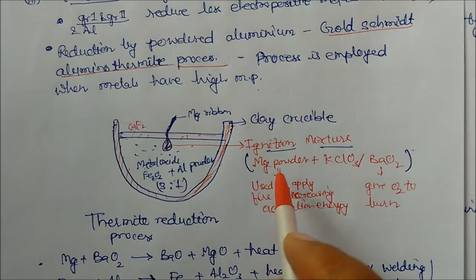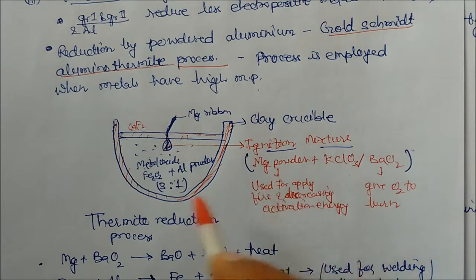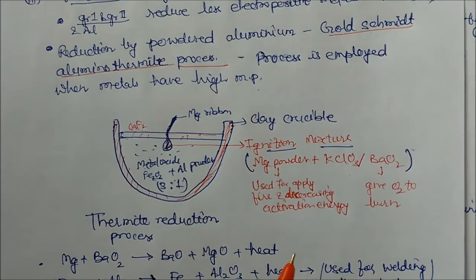And magnesium powder will immediately give fire. So when oxygen plus fire, they will give more oxygen and fire. Then what will happen? Suddenly temperature becomes increased. So ignition mixture makes the surrounding temperature very exothermic with high temperature.